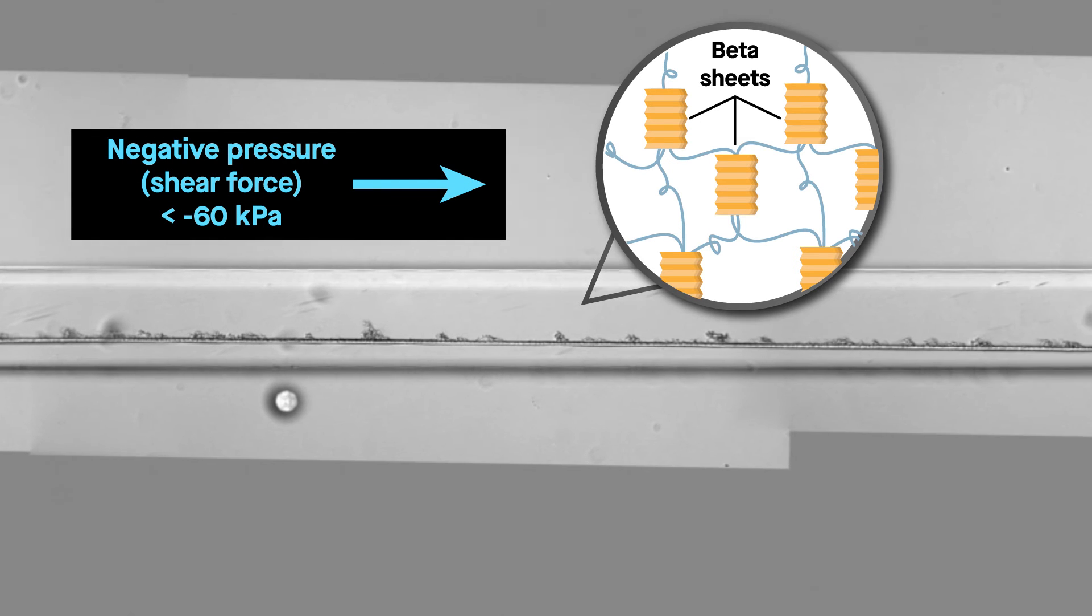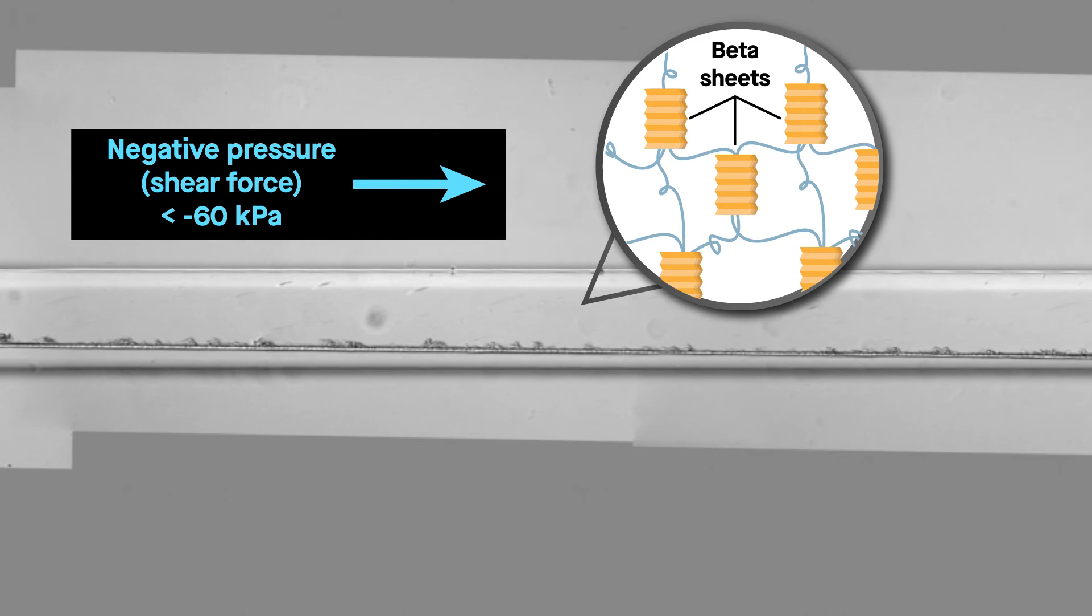Beta-sheet formation, the researchers discovered, requires a certain level of negative pressure, namely shear force.